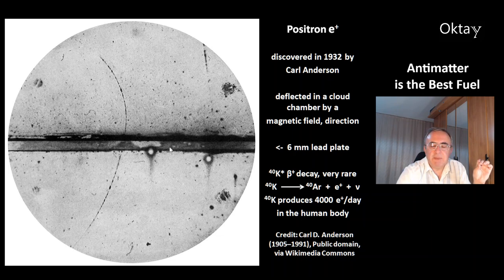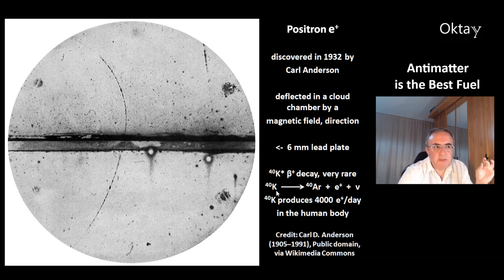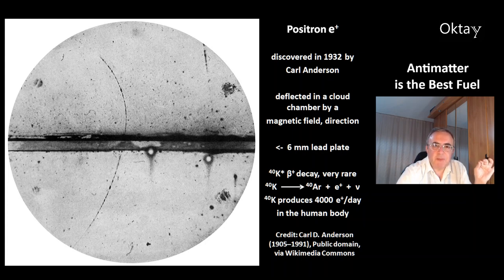In the middle, you can see a 6 mm thick lead plate. One source for the positron is the decay of the potassium-40 isotope. This decay type is very rare. This is the reaction: potassium-40 decays to argon-40, and you get a positron and a neutrino.